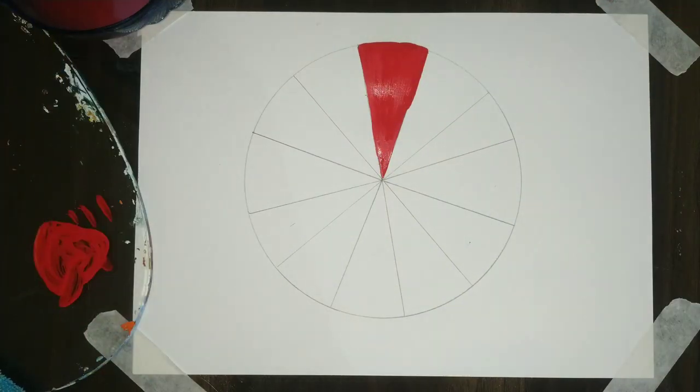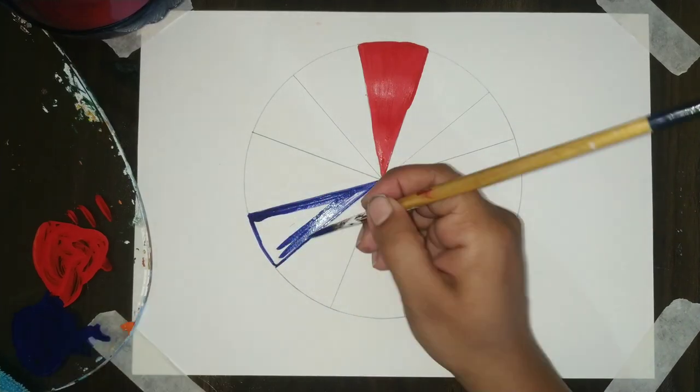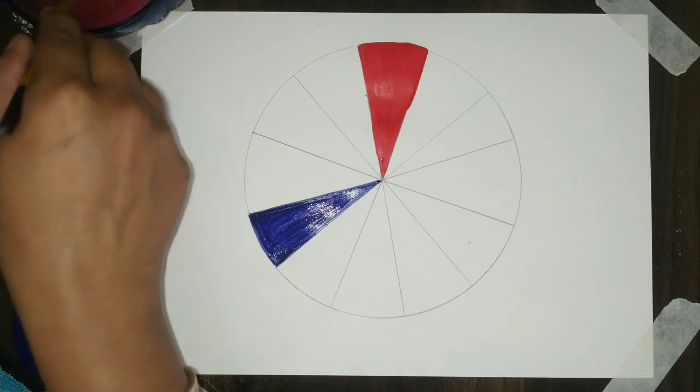My second primary color is blue. So leaving three space here, I will add a blue color. Make an outline and add a blue color. Third one would be yellow.